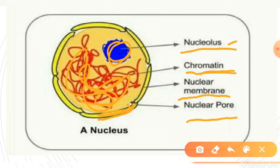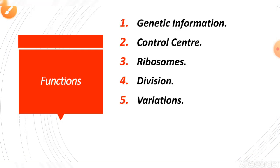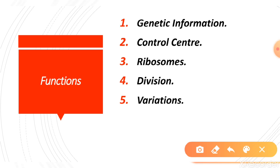Now let's look at the functions of the nucleus. The nucleus is the controlling organelle — the central part — which is why it helps manage many activities happening in the cell. First, it stores genetic information: genetic material, mainly DNA, is contained in the nucleus, so characters are transferred from cell to cell through it. Second, it is the control center: it controls all activities such as the cell's metabolic rate and other cellular activities.